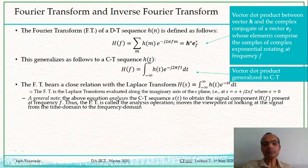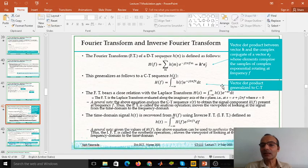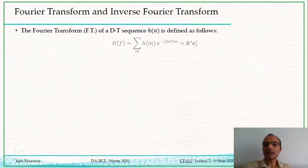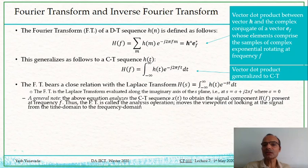Now a few remarks. First, this Fourier transform is closely related to the Laplace transform which you may have studied earlier. The equation for the Laplace transform is a function of the variable s. In the case of the Fourier transformation, this s — which has a general representation as sigma plus j times 2πf — is replaced by just 2πf.